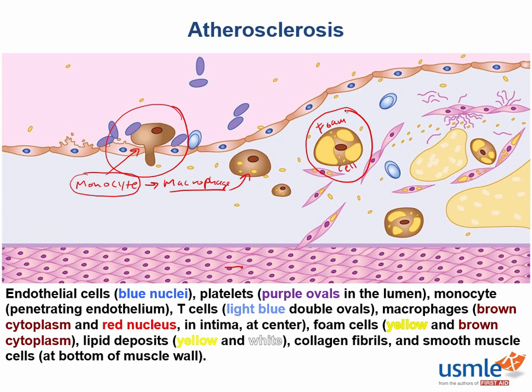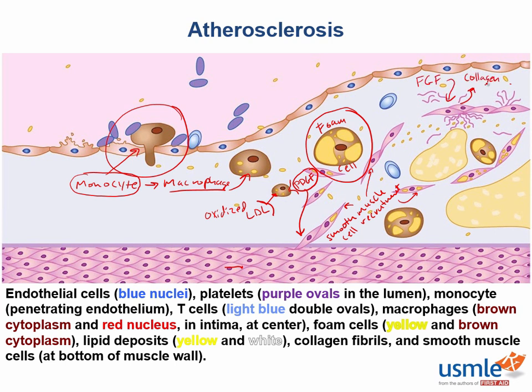The oxidized LDL will also bind to receptors on macrophages, which will trigger the production of platelet-derived growth factor. Platelet-derived growth factor will recruit smooth muscle cells into the intima. Then, fibroblast growth factor will tell local fibroblasts to deposit collagen within the intima. So looking at the entire process, we have dead macrophages spilling out oxidized lipids and cholesterol accumulating within the intima, surrounded by fibroblasts depositing collagen and vascular smooth muscle cells that won't stop growing.